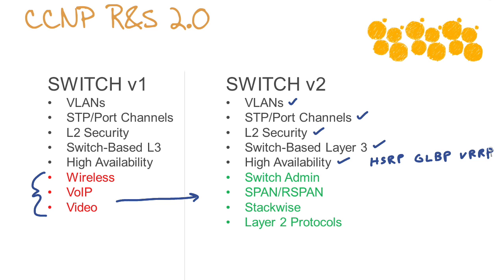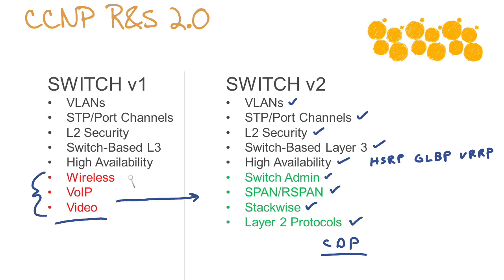Everything kind of remains the same there, but notice there was a drop of those wireless/voice/video technologies, and instead we have switch administration features like setting up SSH and administrative templates on the switches, SPAN and R-SPAN for monitoring frames inside your infrastructure, StackWise technologies, and layer 2 protocols like CDP and other protocols we're going to want to verify and configure at layer 2. So once again, an elimination of some technologies and an expansion of more pure switching topics with Switch version 2.